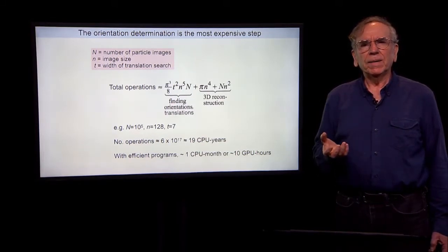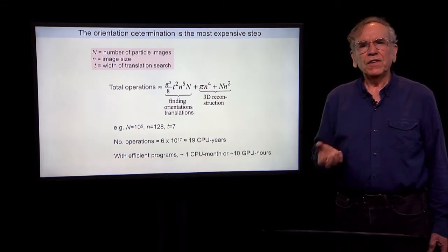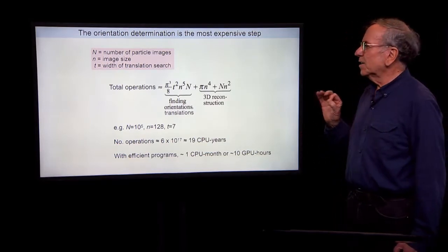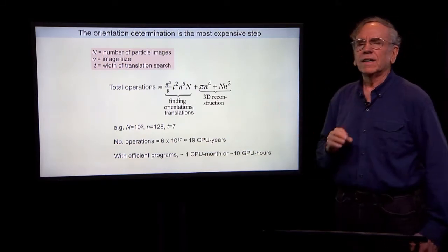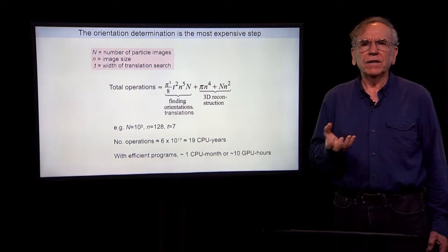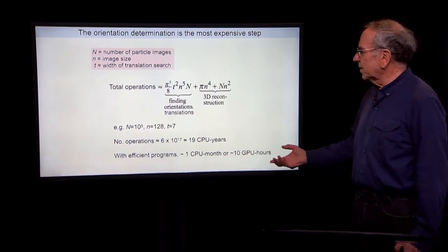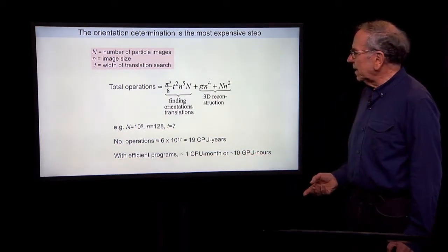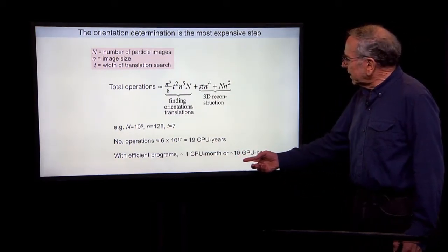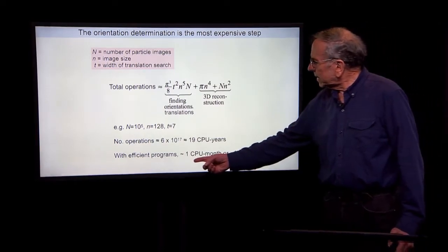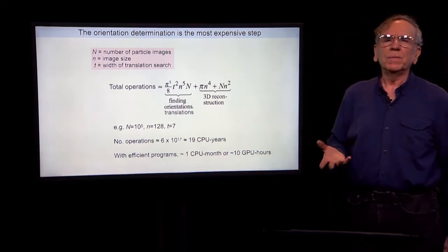But Relion, CryoSpark, other programs are very efficient in choosing orientations and integrating probabilities only in regions where the probabilities are significant. And so there's a considerable speed up.